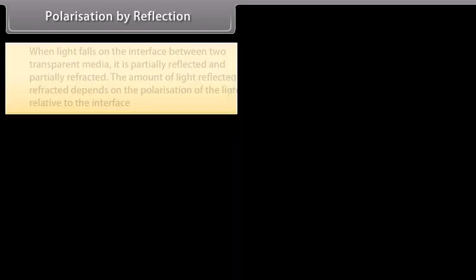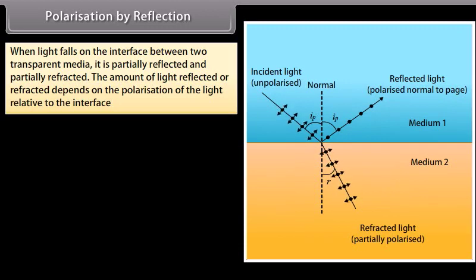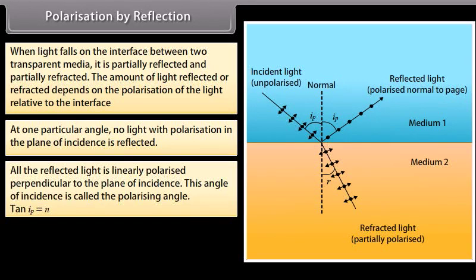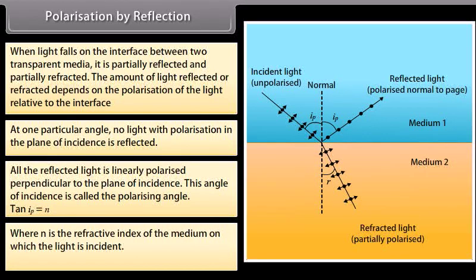Polarization by reflection: when light falls on the interface between two transparent media, it is partially reflected and partially refracted. The amount of light reflected or refracted depends on the polarization of the light relative to the interface. At one particular angle of incidence, no light with polarization in the plane of incidence is reflected; all the reflected light is linearly polarized perpendicular to the plane of incidence. This angle of incidence is called the polarizing angle. Tan(iP) = N, where N is the refractive index of the medium. This equation is known as Brewster's Law.